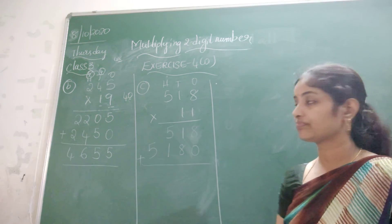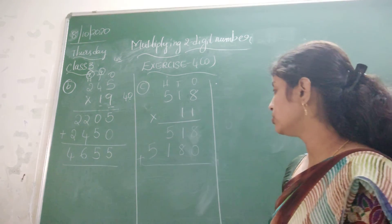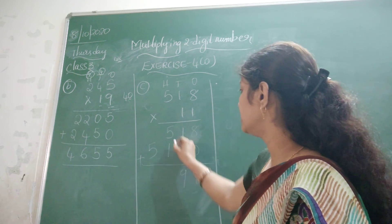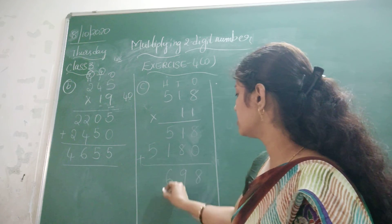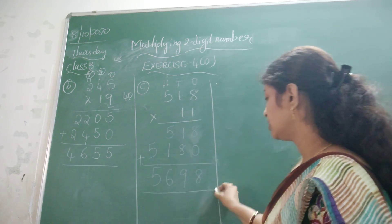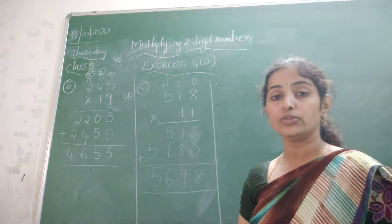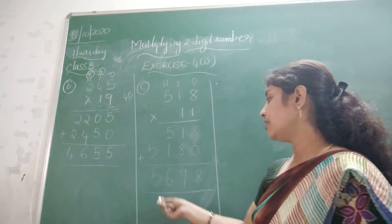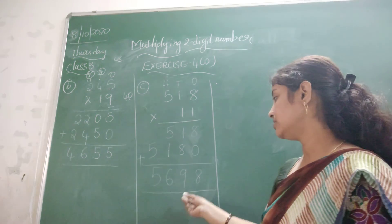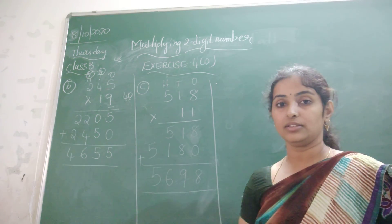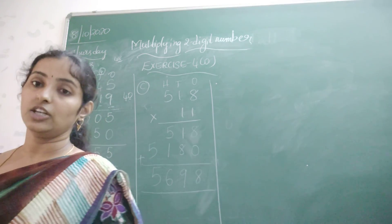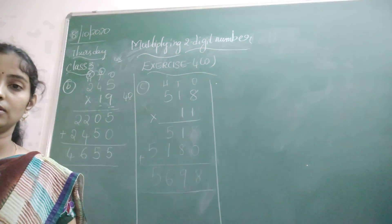Now add. 8 plus 0 is 8. 1 plus 8 is 9. 5 plus 1 is 6. And 5 is remaining. So what is the answer? That is 5,698 — the required answer. In this way you need to multiply by taking 2-digit numbers. Thank you.